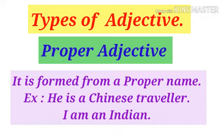Now let us discuss each kind of adjective in detail. As we know, adjective means the qualification or description of a noun or pronoun. A proper adjective qualifies a noun or pronoun by a proper name. For example, 'He is a Chinese traveler' — here 'traveler' is the noun and it is qualified by the proper name 'Chinese'. Similarly, 'I am an Indian' — 'Indian' is the proper adjective.